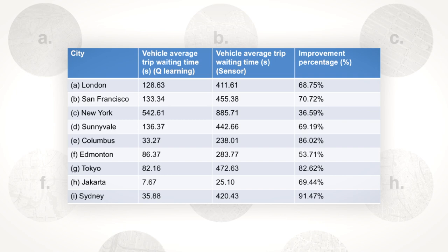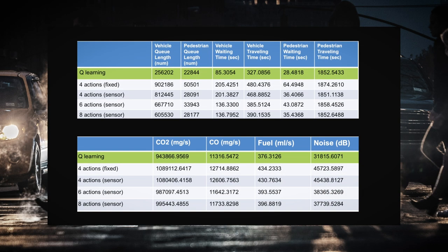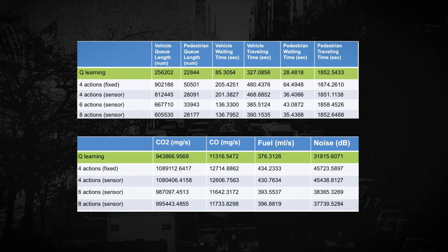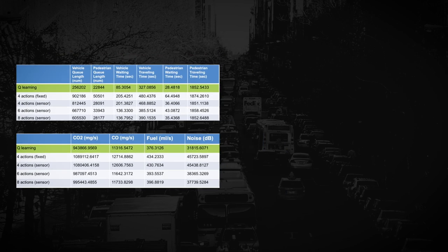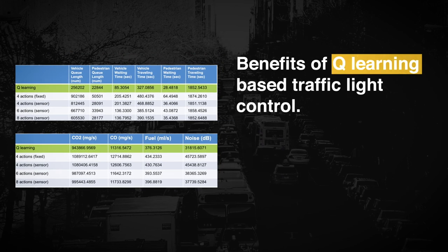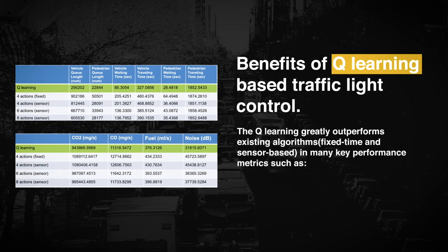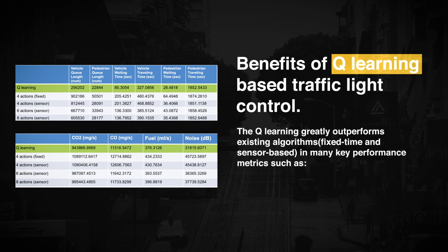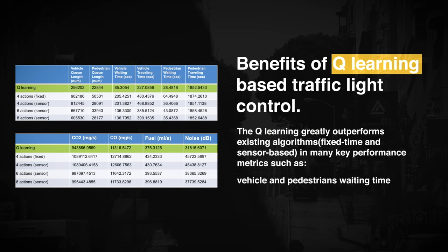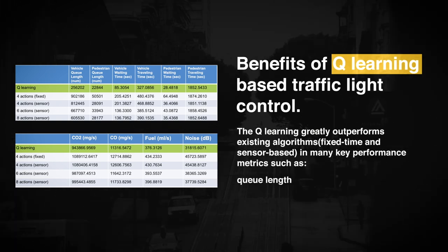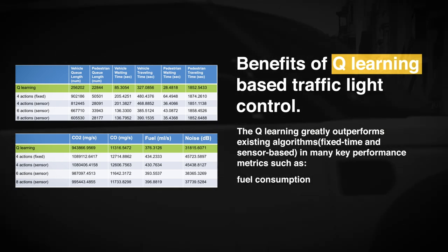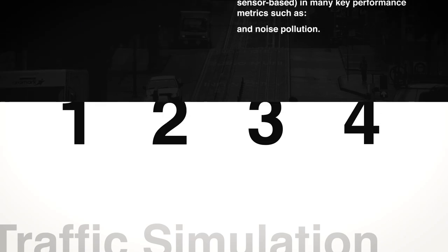The simulation results show that the Q-learning-based solution can greatly reduce the vehicle average trip waiting time due to more efficient traffic light control. In addition to vehicle average trip waiting time, Q-learning can also greatly outperform existing algorithms in many key performance indicators such as pedestrians waiting time, vehicle and pedestrian queue length, vehicle emissions, fuel consumption, and noise pollution.